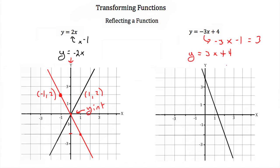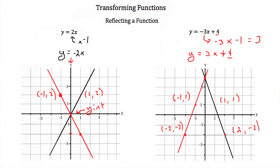To reflect this, we stay at our y-intercept because that doesn't change — it's still 4. Every positive point goes to negative: here we have point (1, 1), and reflecting across the y-axis gives (-1, 1). Here we have point (2, -2), so the reflected graph gives (-2, -2). We connect the dots and end up with a function that looks like that.